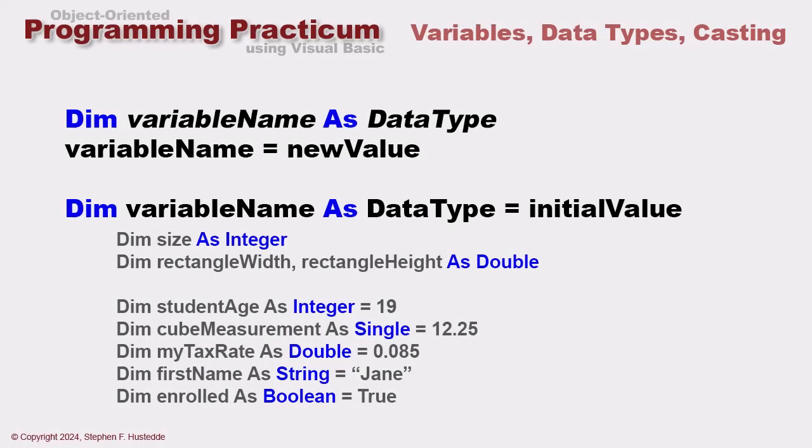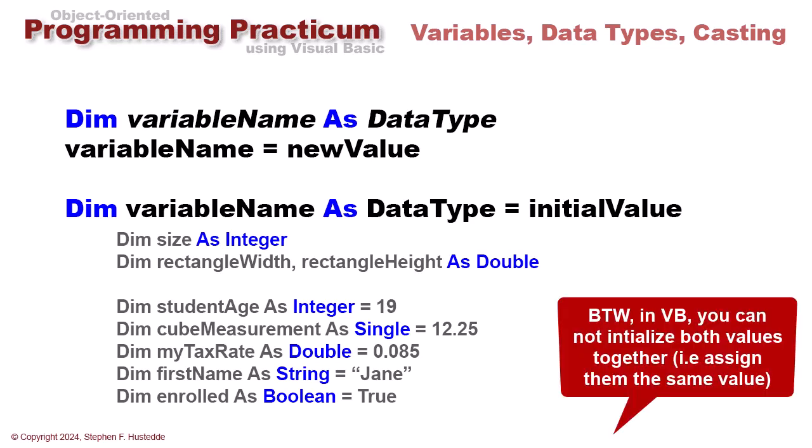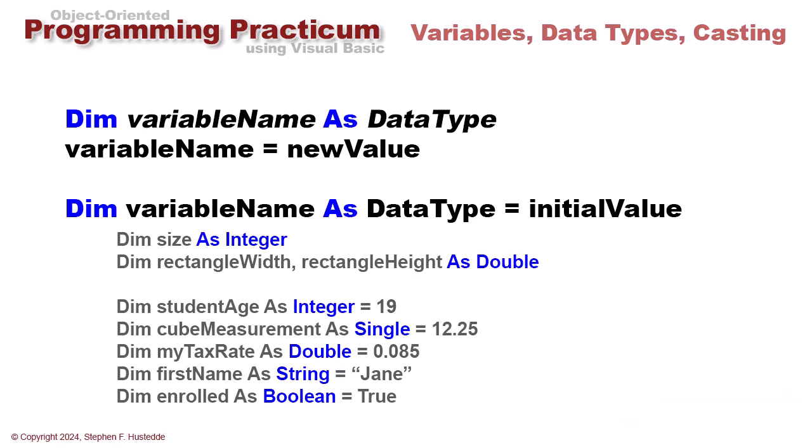Here are some examples. We can dim size as integer. We can dimension multiple variables as the same data type at the same time, so I've got two variables rectangle width and rectangle height, declaring both of them as containing a double data type. The next statement assigns an initial value to each of our variables.